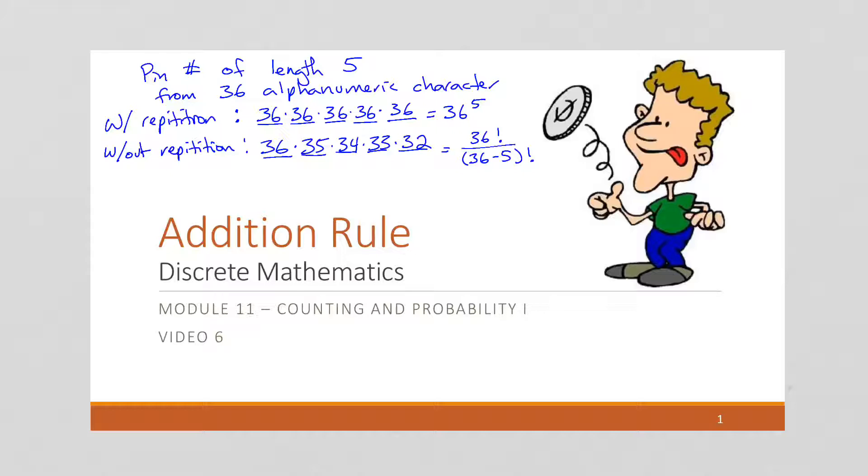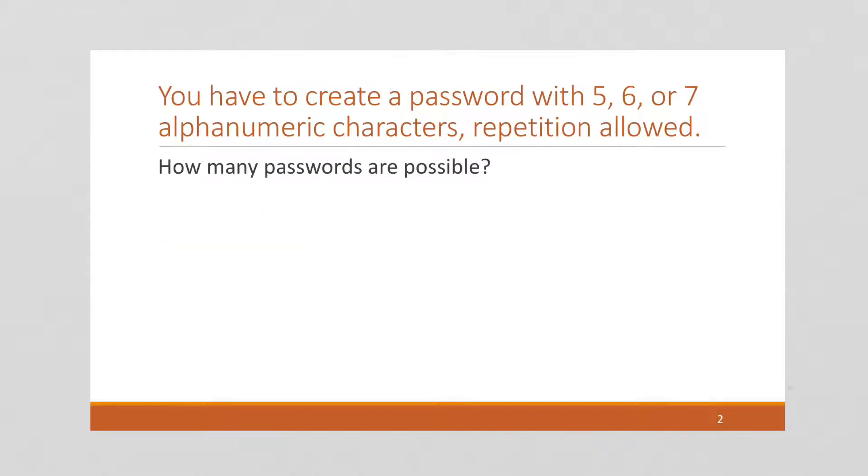So this is a little different when we use the addition rule. In this problem, we're going to create a password with 5, 6, or 7 alphanumeric characters. So now, these are, you can think of this as a series of steps. You could write an algorithm to solve this, right? Figure out how many passwords have 5 digits, how many passwords have 6 digits, and how many passwords have 7 digits. And then would you multiply those together? No, that doesn't make a lot of sense. In fact, you would add these together, because it's one or the other. Not all of them are happening, and that's the difference.